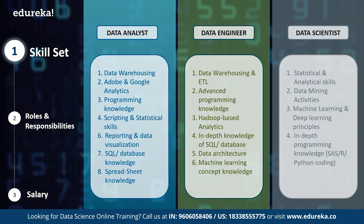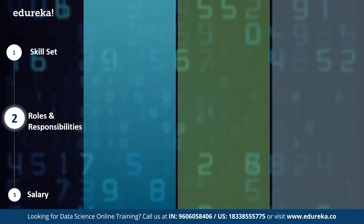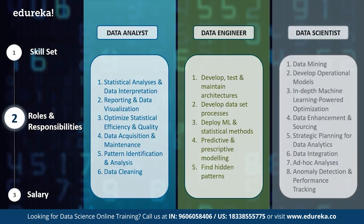Now that you have a complete understanding of the required skill sets, let's look at the typical roles and responsibilities of these professionals. The roles and responsibilities of a data analyst, data engineer, and data scientist are quite similar. A data analyst is responsible for statistical analysis and data interpretation, and should be well-familiarized with data reporting and visualization tools — for example, Python libraries like matplotlib and seaborn, or ggplot for R. A data analyst should never compromise on quality and must be comfortable with data acquisition, maintenance, pattern detection, and data cleaning.